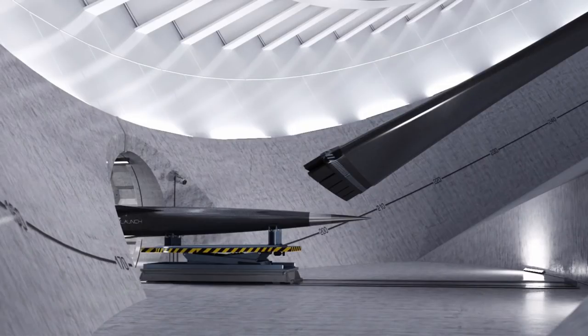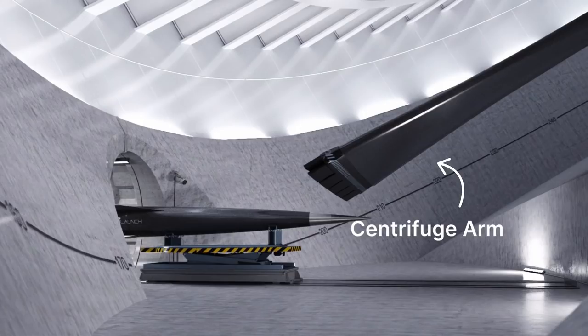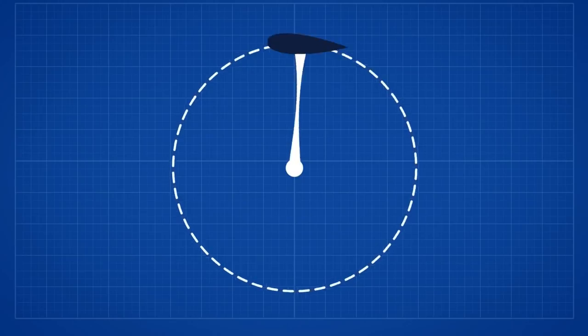The other is the strength of the arm spinning up the payload. Spinning anything that fast causes extreme forces that can easily warp and break metal. The very principles of physics that allow this idea to work can also rip the machine apart. Here's why.